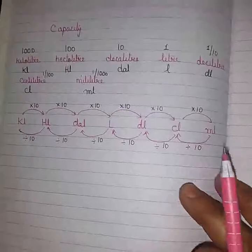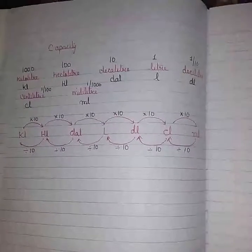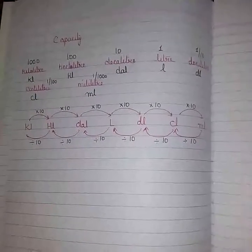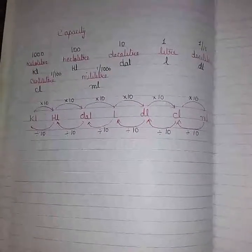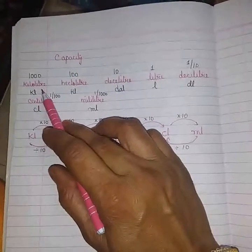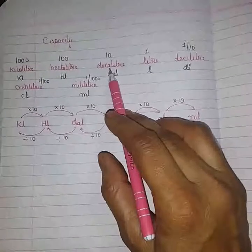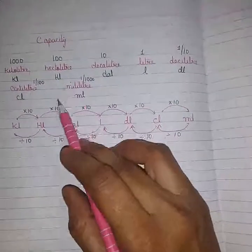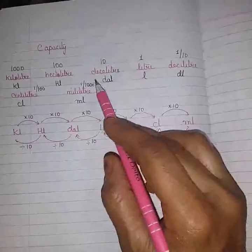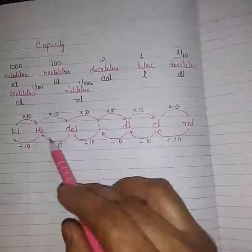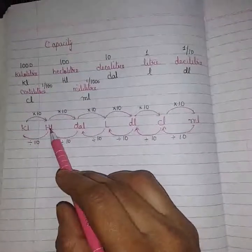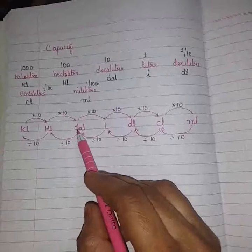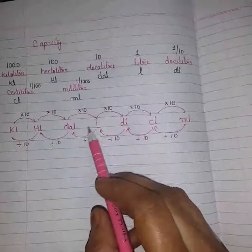Now we will learn some of the units which measure capacity. Capacity means volume — things like oil, water, and milk are all measured in litres. So liquid things are measured in litres. The biggest unit is kilolitre, then hectolitre, decalitre, litre, decilitre, centilitre, and millilitre — millilitre is the smallest. When moving from left to right, multiply. When moving from right to left, divide. Kilolitre to hectolitre, multiply by 10. Hectolitre to decalitre, multiply by 10. Decalitre to litre, multiply by 10. Moving one skip at a time, every time multiply by 10.